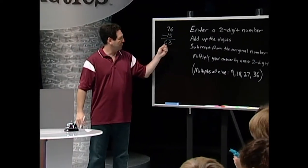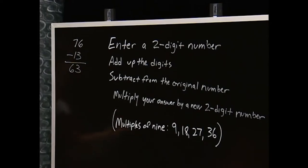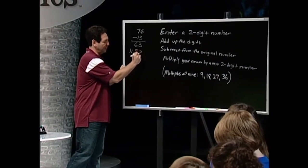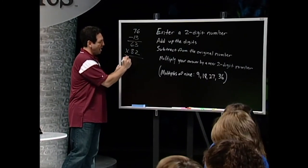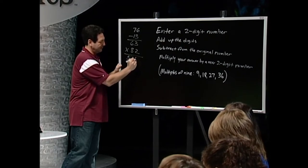Now, multiply your new answer by a whole different two-digit number. So say we have a number like, I picked 82. Again, pick your own number. 63 times 82 is 5,166.